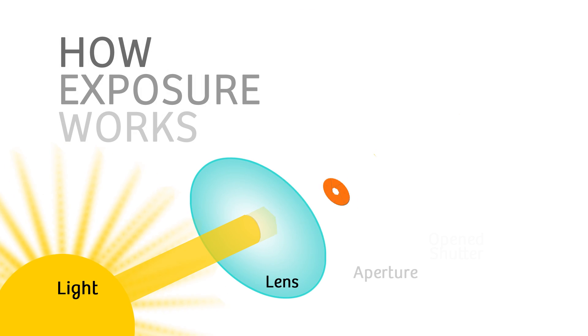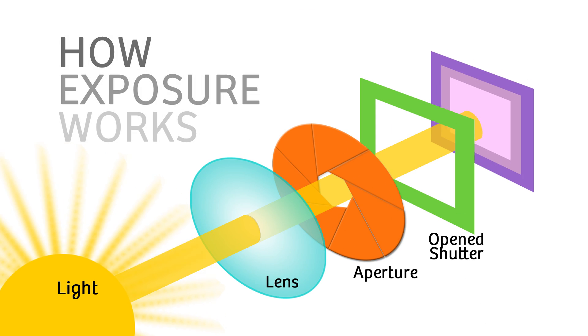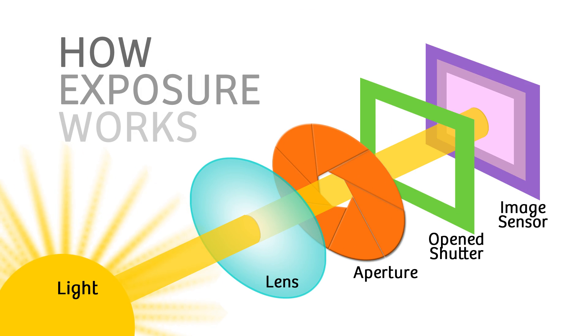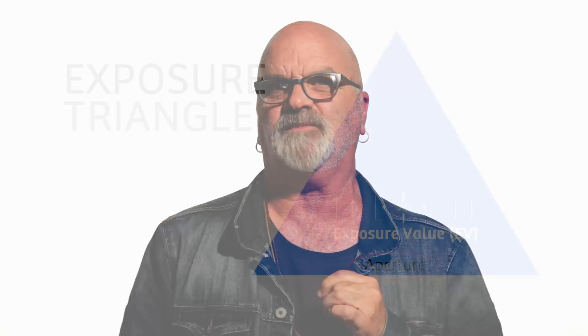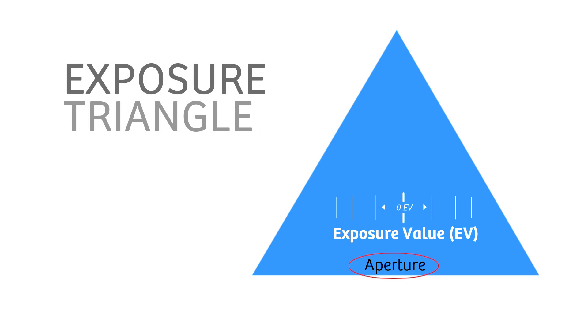Let's first review how exposure works. It's the simple process of letting light through the lens onto the sensor. For every photograph you ever take, there are three factors that determine exposure: Aperture, Shutter Speed, and ISO.